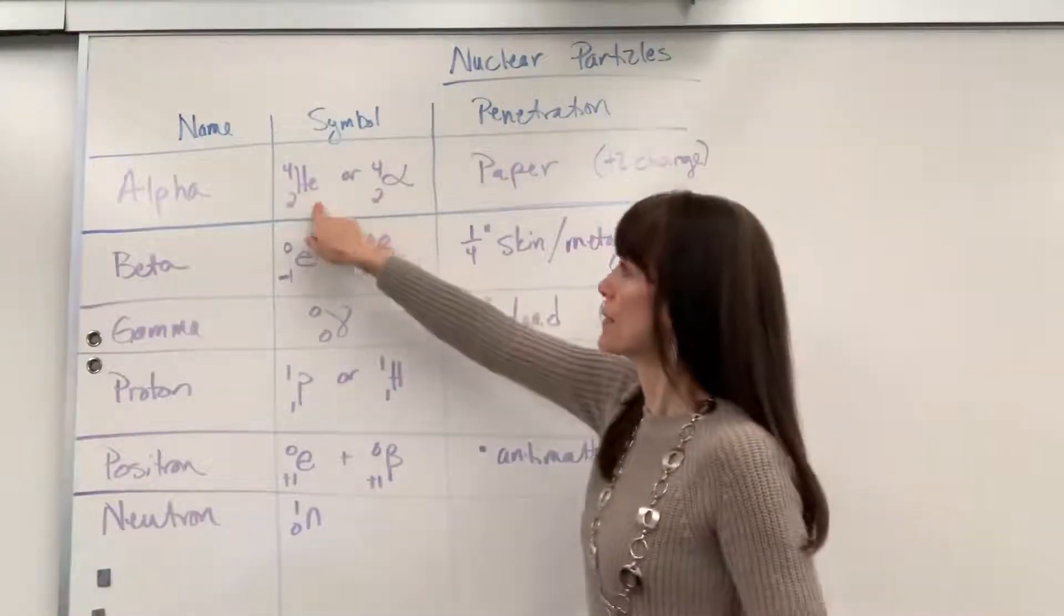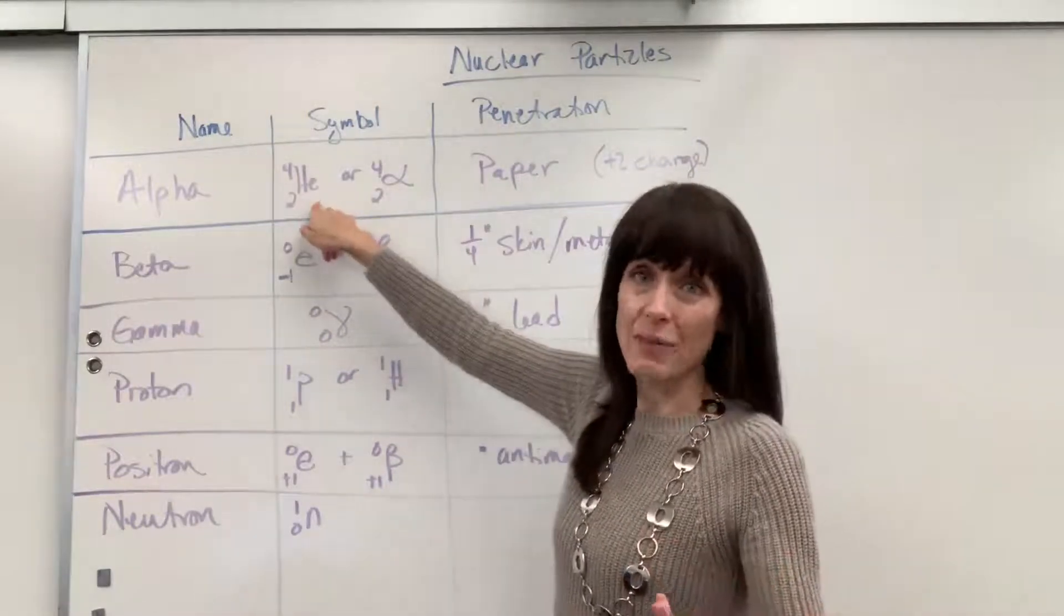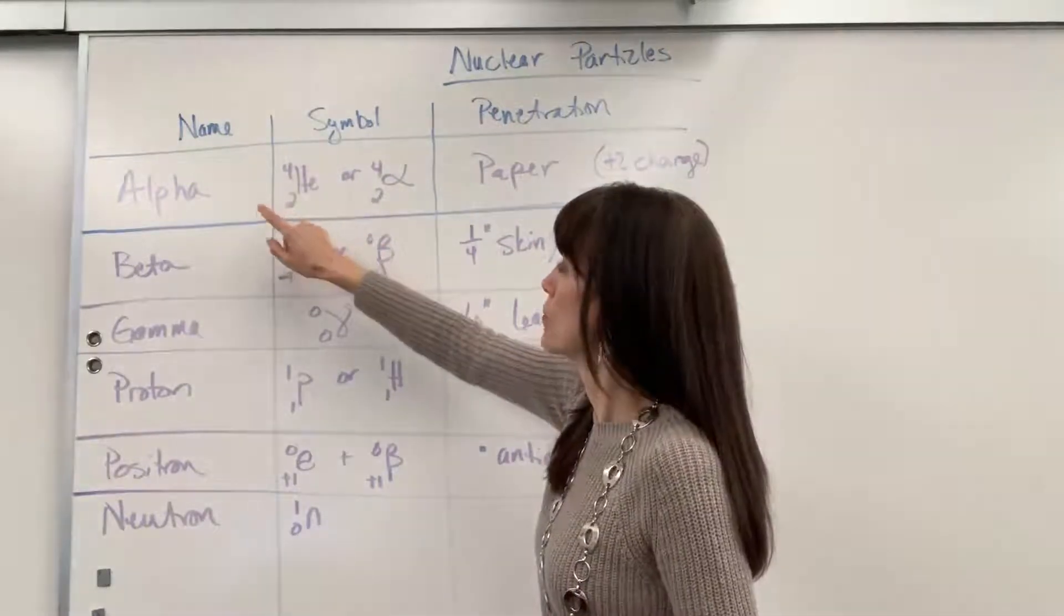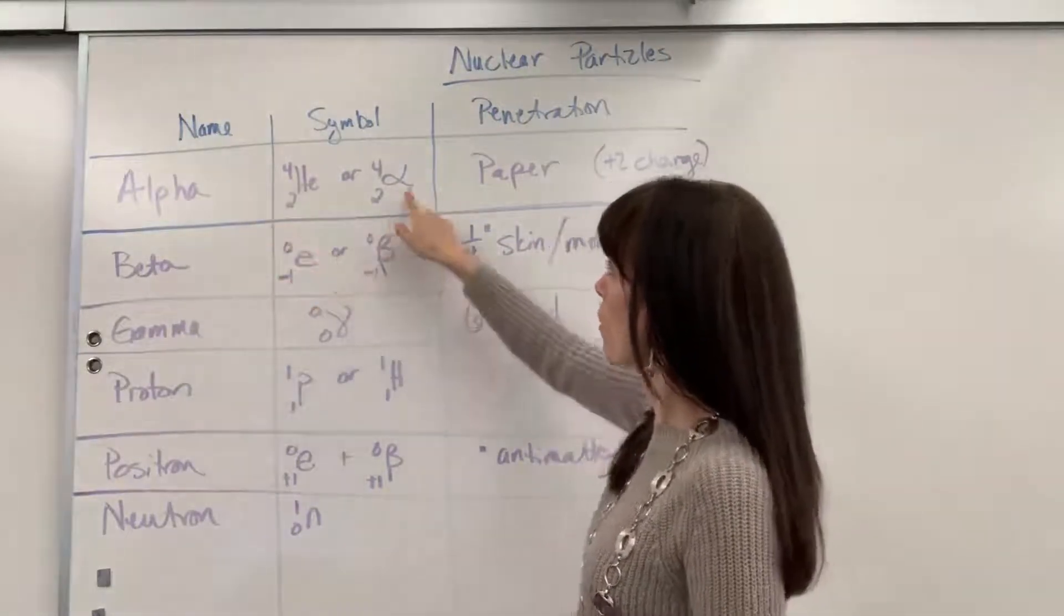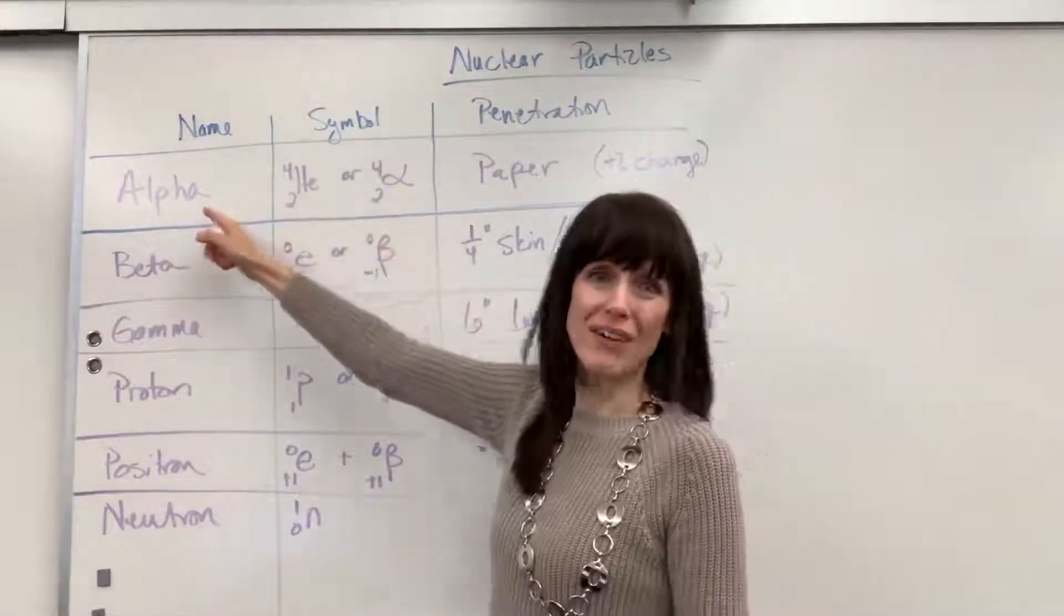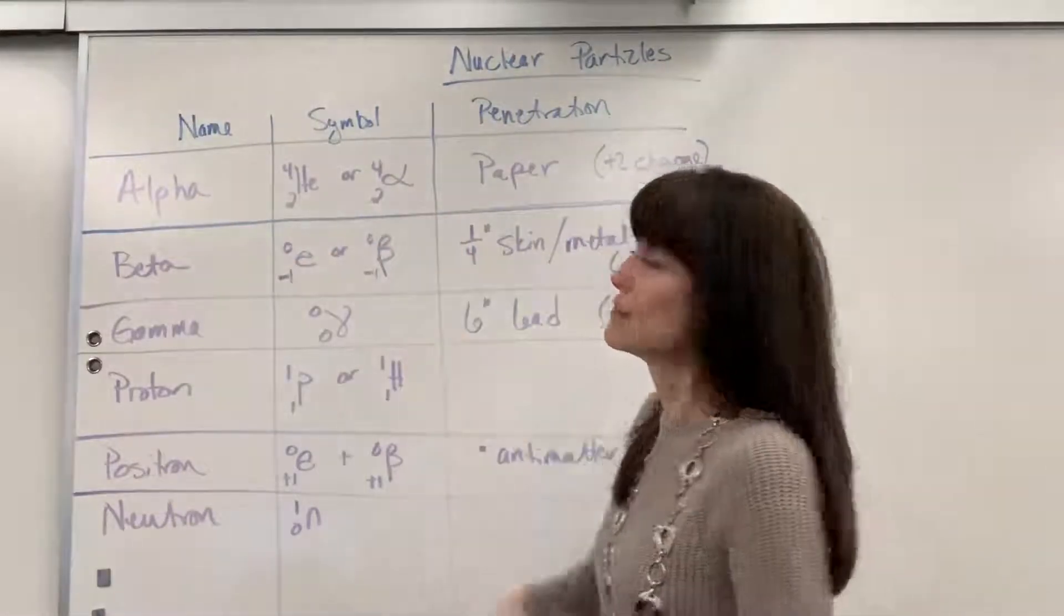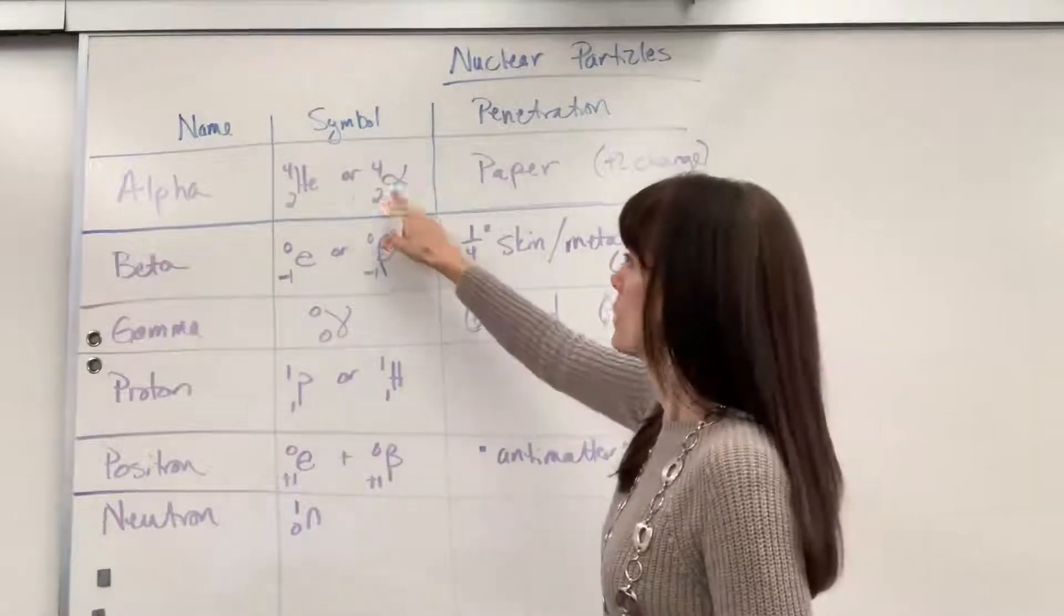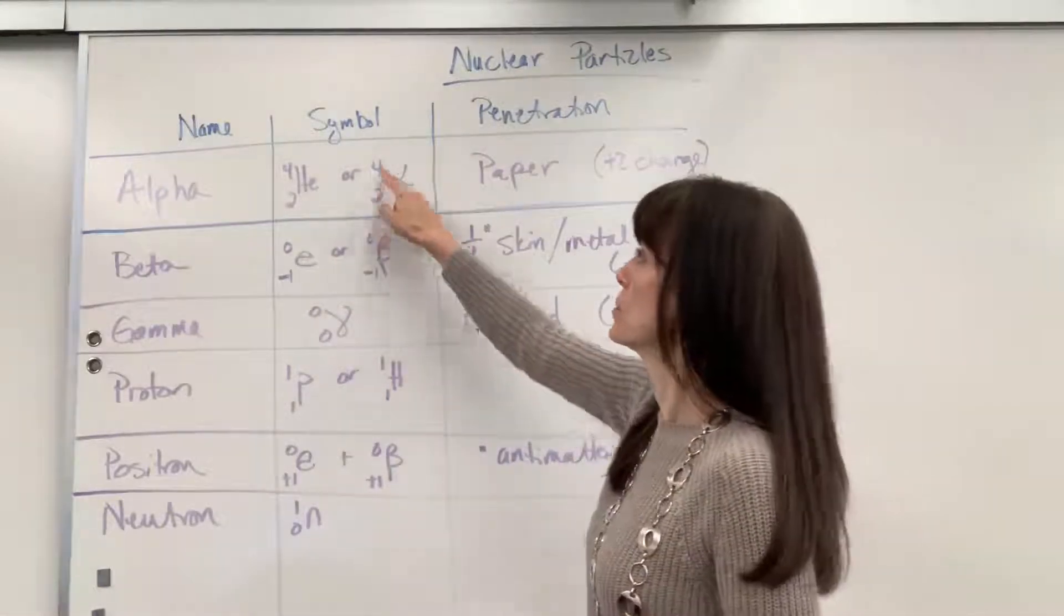Now our symbol, pretty straightforward. You could just write a helium isotope. So the 2 for the atomic number, 4 for the mass number, or this is the lowercase alpha in the Greek alphabet. So that is an alpha letter in the Greek alphabet. You could put alpha by itself or you could do the 2 and the 4.